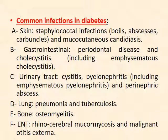Common infections in diabetes include staphylococcal infections, mucous membrane diseases due to fungal infection, such as vulvovaginal candidiasis, emphysematous cholecystitis in the gallbladder, periodontal disease with tooth loss, urinary tract infections, emphysematous pyelonephritis, and perinephric abscess. In the lungs: pneumonia and TB are common. Osteomyelitis and rhinocerebral mucormycosis, which is a lethal fungal disease, are also seen.